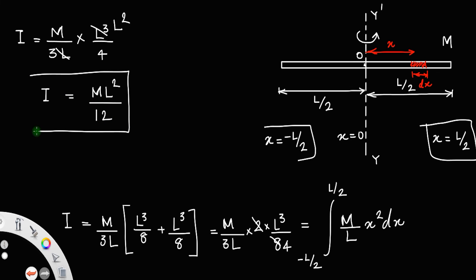Therefore, the total moment of inertia is equal to ml²/12. This is the moment of inertia of a rod about an axis passing through its center and perpendicular to its length.